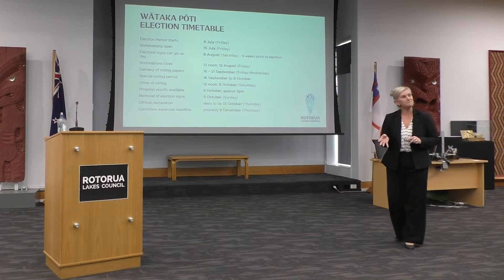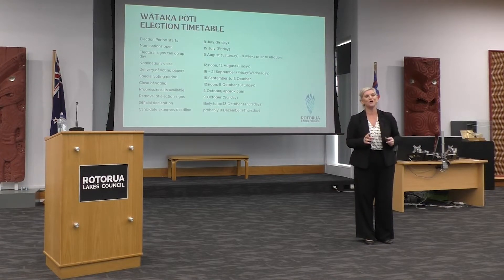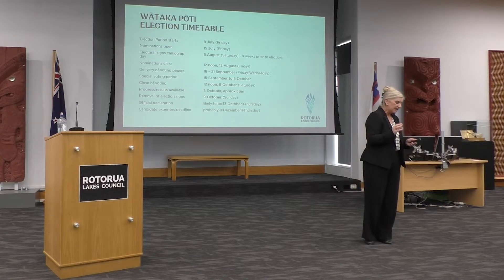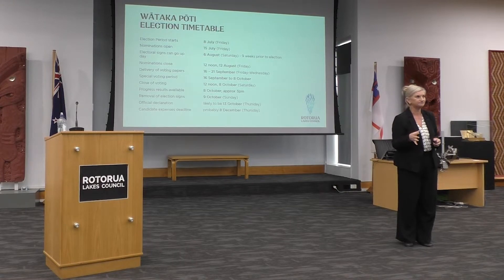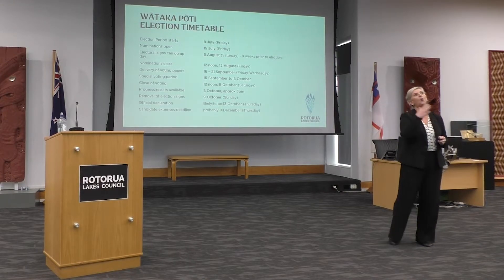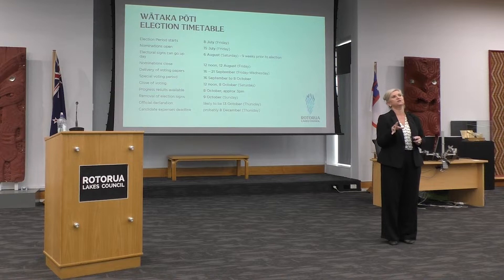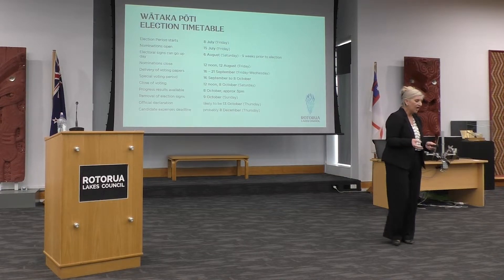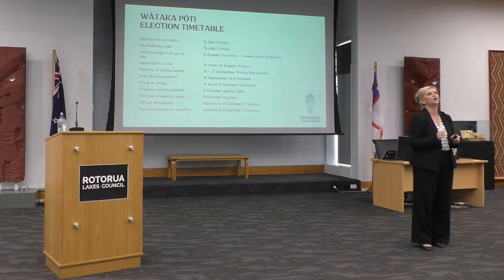There's a pretty tight timeframe around the elections. The election period started on the 8th of July — three months out from election day — and nominations opened a week after that on the 15th of July. From the 6th of August, election signs start going up around the district. By the 12th of August, all nominations will be in, and we'll be able to publish and let the community know who is running for council.